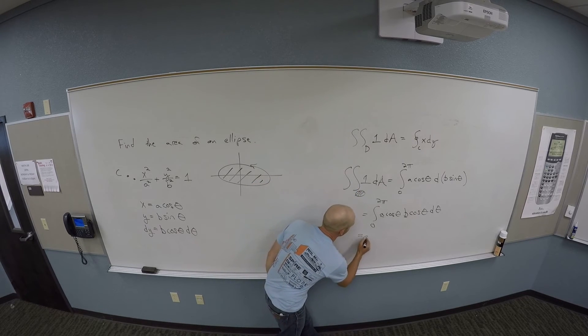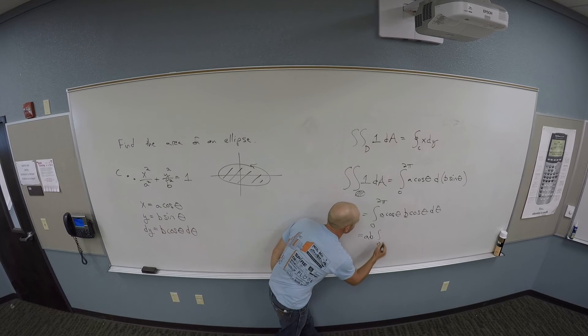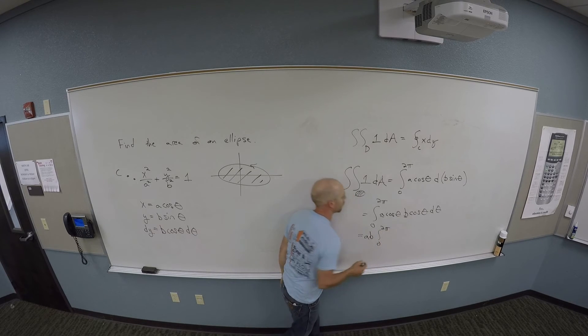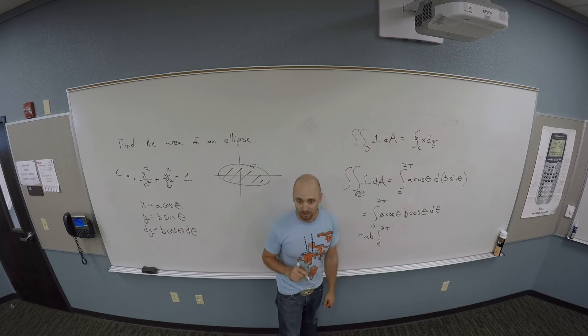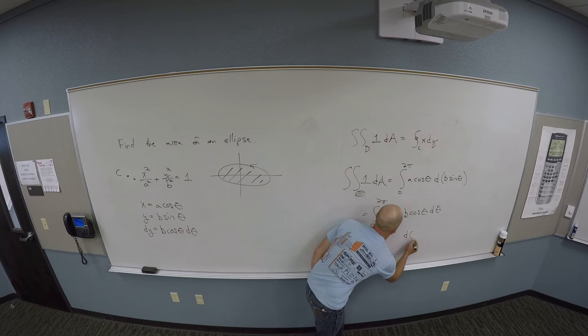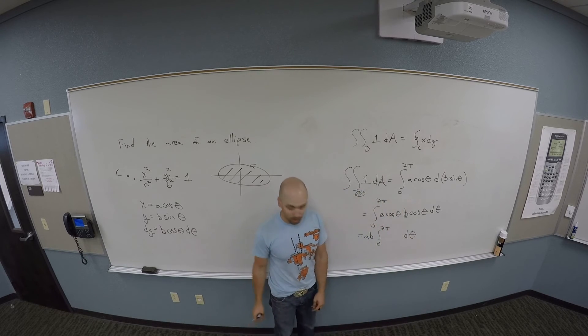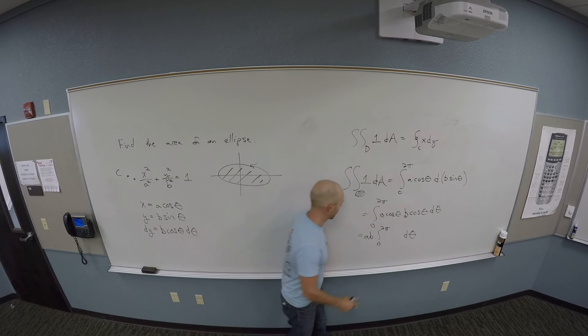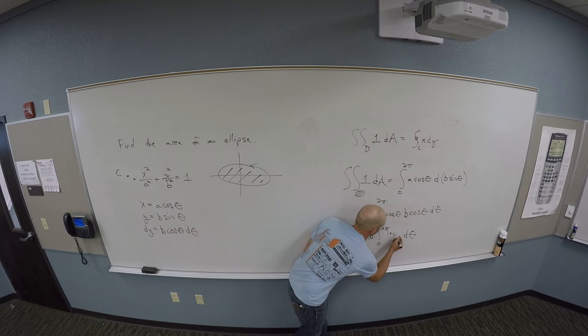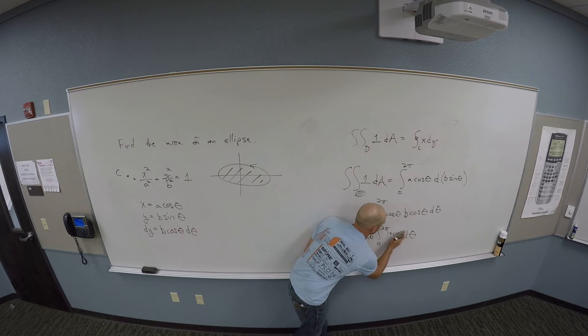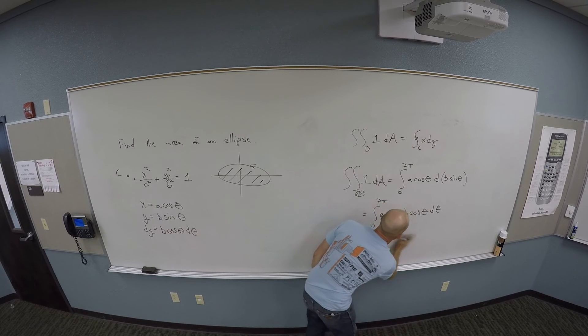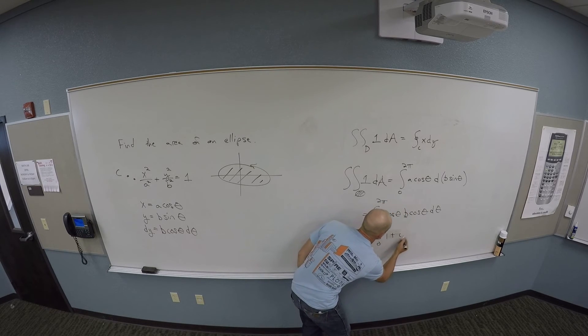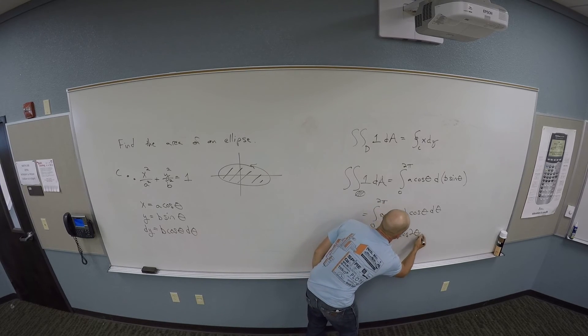So here I've got a b, the integral from zero to two pi of cosine squared theta d theta. And maybe I want to replace cosine squared with one plus cosine two theta, and then take out the over two outside.